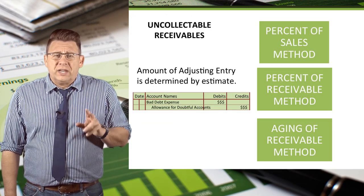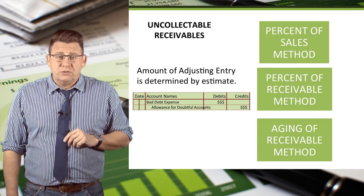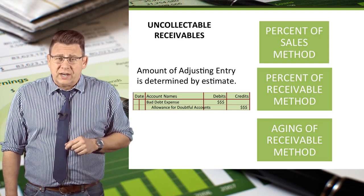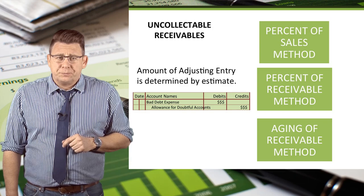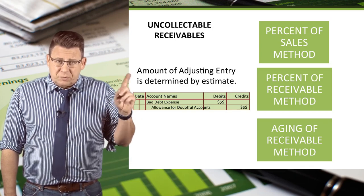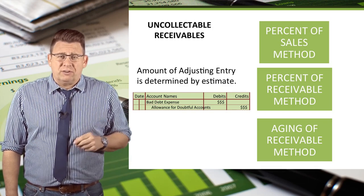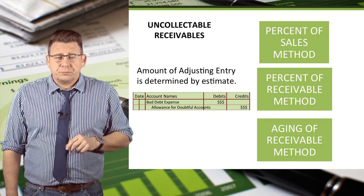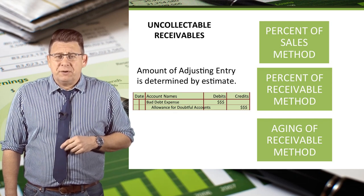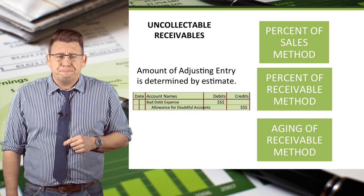There are three common methods that can be used to determine the amount of expense recorded in an adjusting entry. These methods — the percent of sales, percent of receivables, and aging of receivables — are covered in separate video podcasts, so I would encourage you to check them out.